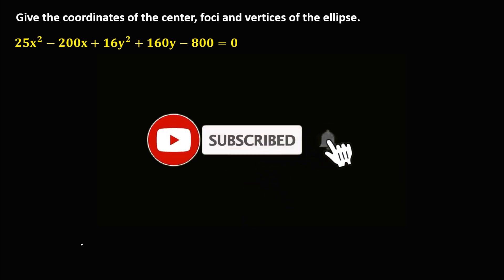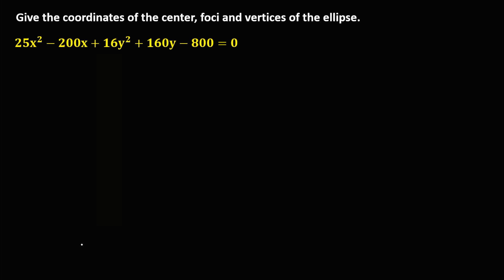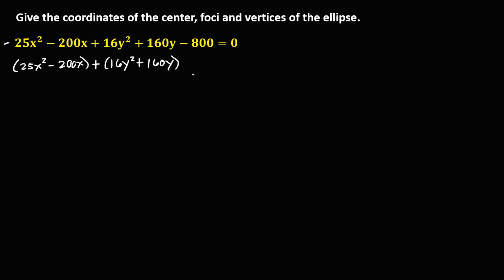Welcome to MathStorya. Let's work on this problem: give the coordinates of the center, foci, and vertices of the ellipse from the given equation. First, we need to group all x terms and group all y terms. We have 25x² minus 200x, then plus 16y² plus 160y, equals negative 800. Transposing, this becomes positive 800 on the right side.